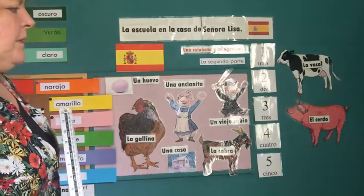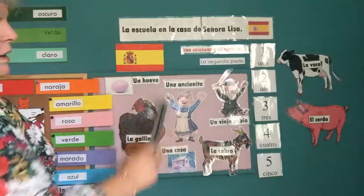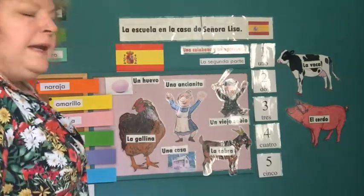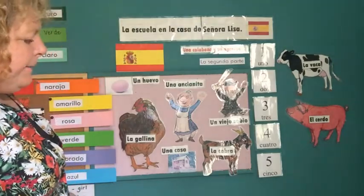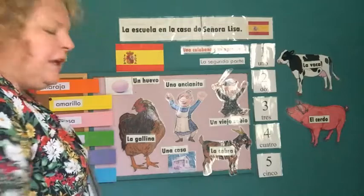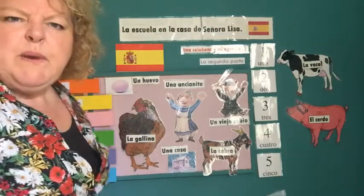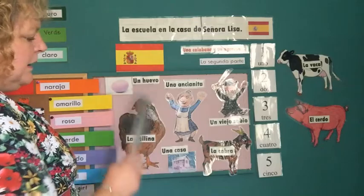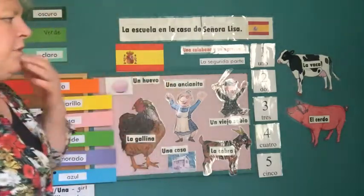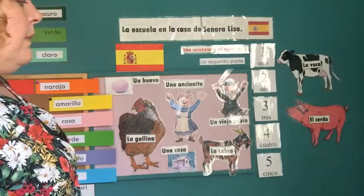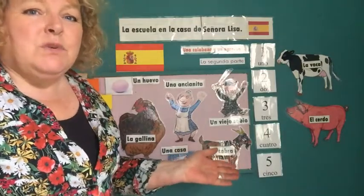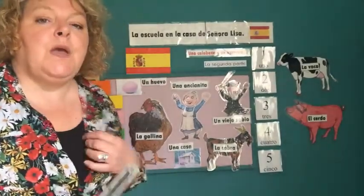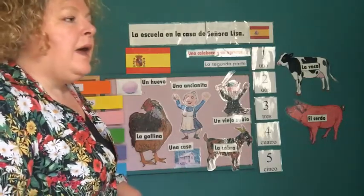So let's find out what happens in la segunda parte. Remember the little old lady, una ancianita, has asked un viejo sabio - the wise old man - please help me. My house is a squash and a squeeze. And so he says, unusually, we'll bring your chicken in then. And she says, that's a bit weird - what am I going to bring my chicken in for? But she does. And it lays an egg in the house on the alfombra - the rug.